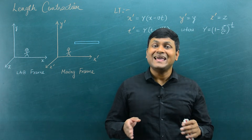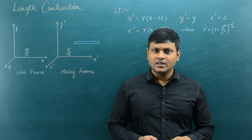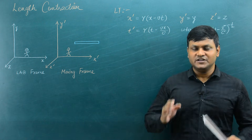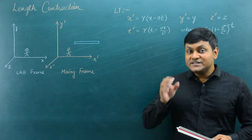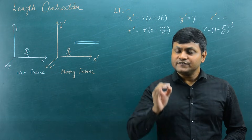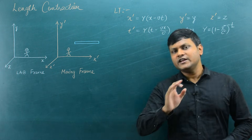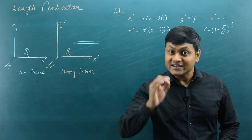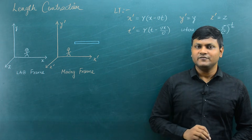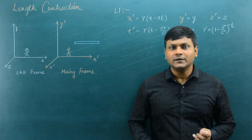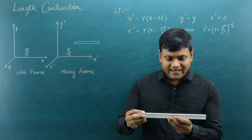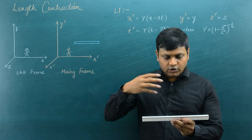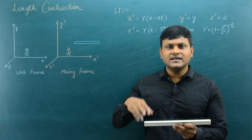The measurement of length appears to have contracted. However, you need to understand that the measurements are always done by some observer. So it depends from the perspective of which observer you are referring to the length of an object — whether you are referring to the length from an observer at rest or an observer in relative motion. For example, if I am holding this scale, this scale has a length of around 30 centimeters. So according to me, the length of the scale is 30 centimeters.